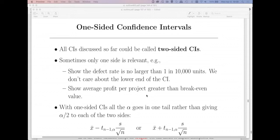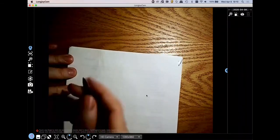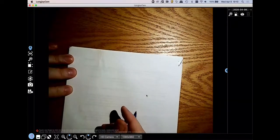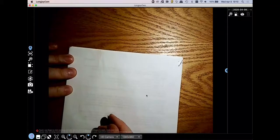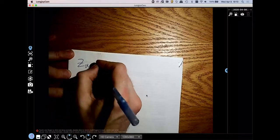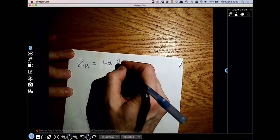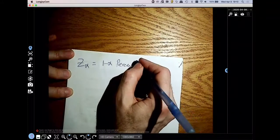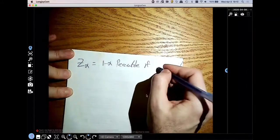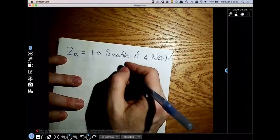So how do we do that? I'd like to start with a review of two-sided confidence intervals and then show how this translates into the one-sided instance. Let me say that Z sub alpha is the 1 minus alpha percentile of a normal 0, 1 distribution.